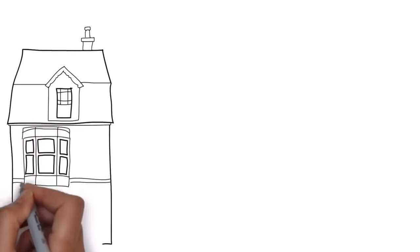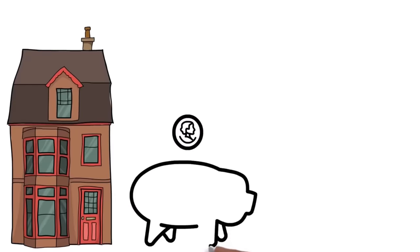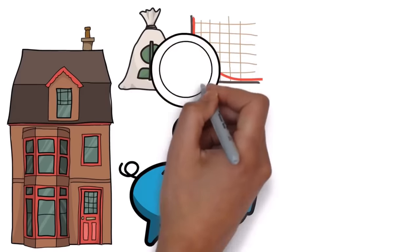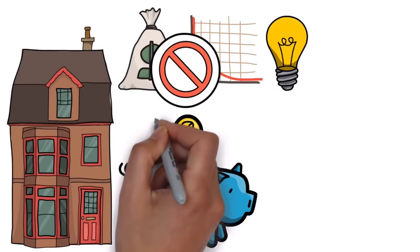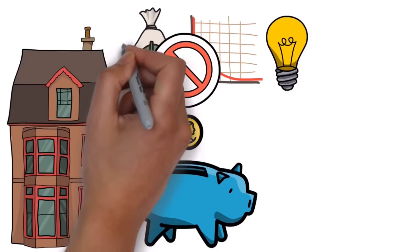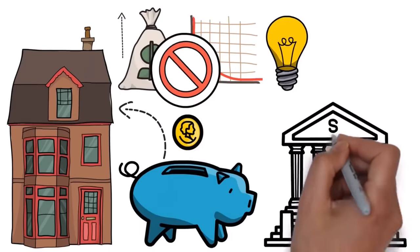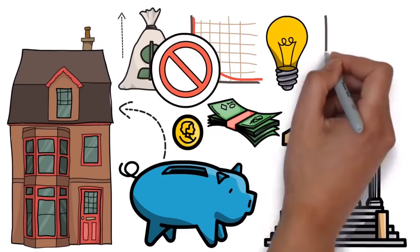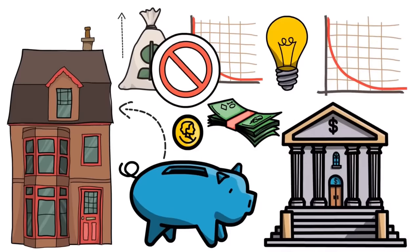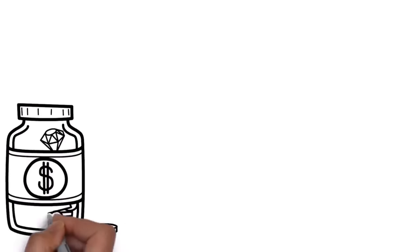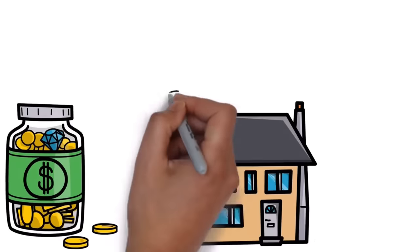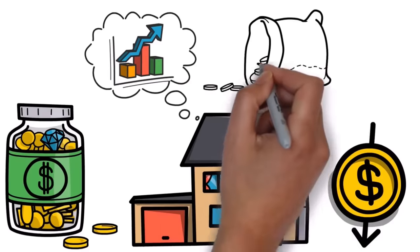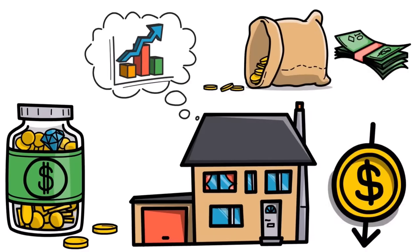Before we wrap things up, let's see how this housing market crash will affect homeowners and investors. For homeowners, when interest rates go up, those with adjustable-rate mortgages or folks looking to refinance might struggle with higher monthly mortgage payments. This could lead to more foreclosures and a bunch of homes on the market at rock-bottom prices. As for investors, especially those who bought properties thinking they'd keep going up in value, they'll face new challenges as prices drop. They might end up with properties worth less than what they owe and less rental income.